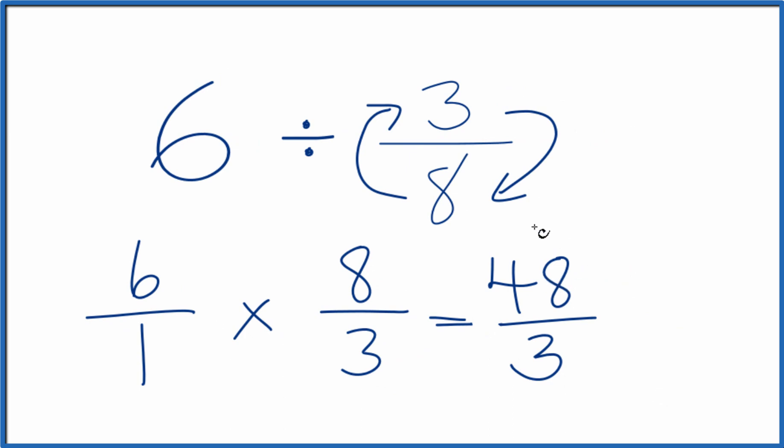It turns out if we divide 48 by 3, we get 16. So in answer to our question, 6 divided by 3 eighths, that equals 16. And if you multiplied 16 by 3 eighths, you get 6.